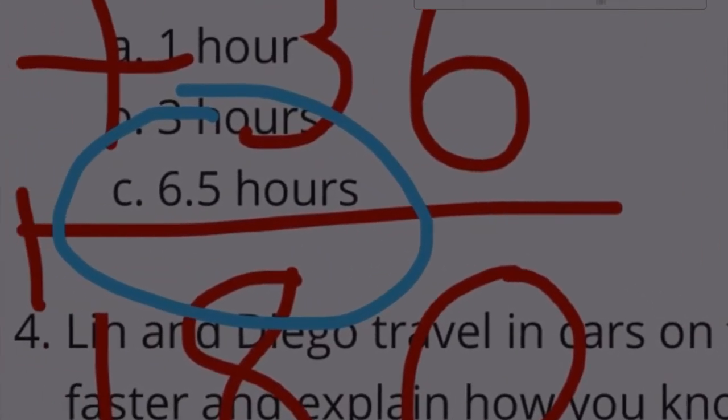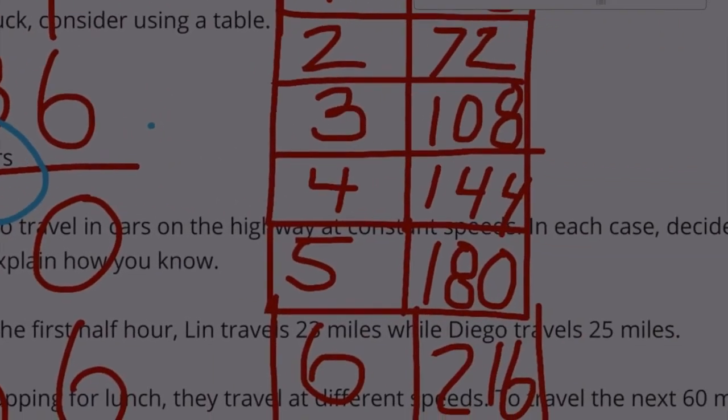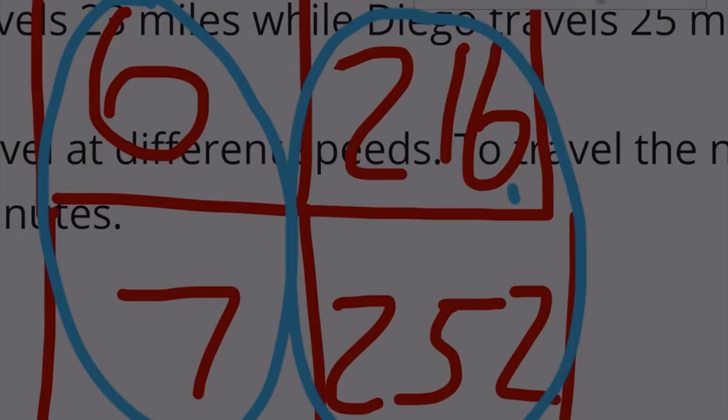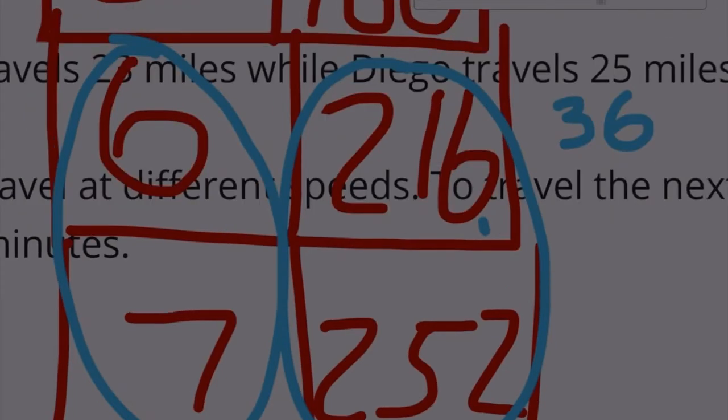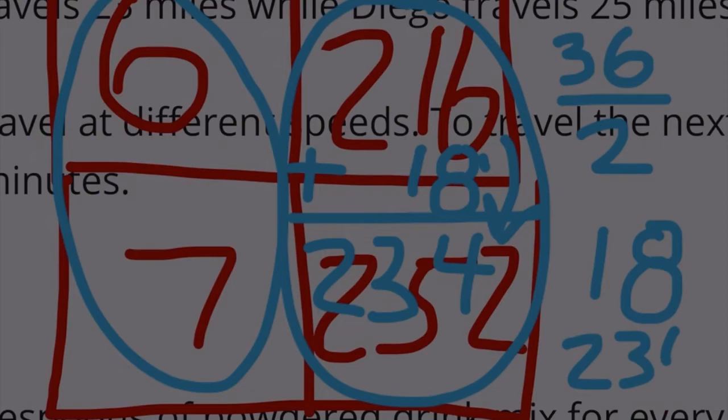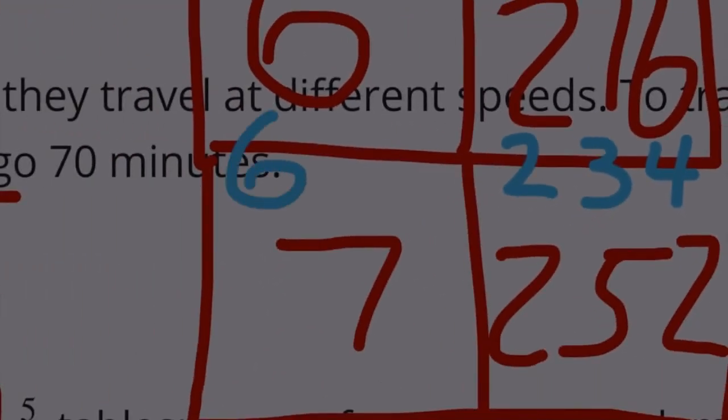Part C was asking for 6.5 hours, which is exactly between 6 hours and 7 hours. So we'd have to find the amount that's exactly between 216 and 252. Instead of adding 36 to 216 to get 252, we could add half of 36. Half of 36 is 18, so if we add 18 to 216 we get the answer. Or we could add 216 to 252 and divide that answer by 2 and we should get the answer. 234. So 234 to 6.5.